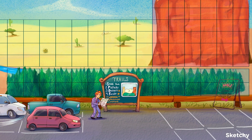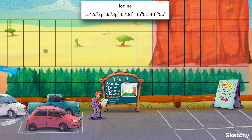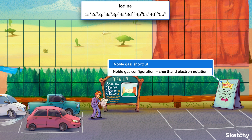Writing out the electron configuration for small ions and atoms isn't too bad, but working through them for larger atoms gets significantly more lengthy. Iodine, for example, has 53 electrons. That means its full electron configuration is 1s2, 2s2, 2p6, 3s2, 3p6 — and that's already a lot to keep track of.